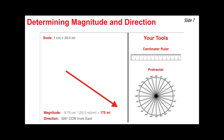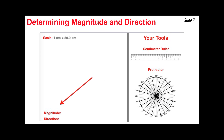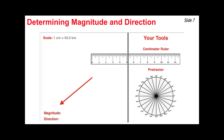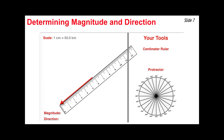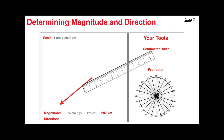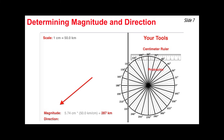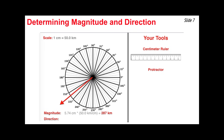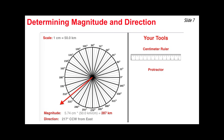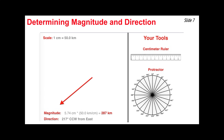Here's another example. You need a ruler and a protractor. Place the ruler's zero point at one end of the vector and measure its length. Use the scale to convert to real-world units — in this case, the vector is about 5.74 centimeters long, which comes out to 287 kilometers. Then move the protractor so its origin is at the tail of the vector and read off the direction: 217 degrees counterclockwise from East.